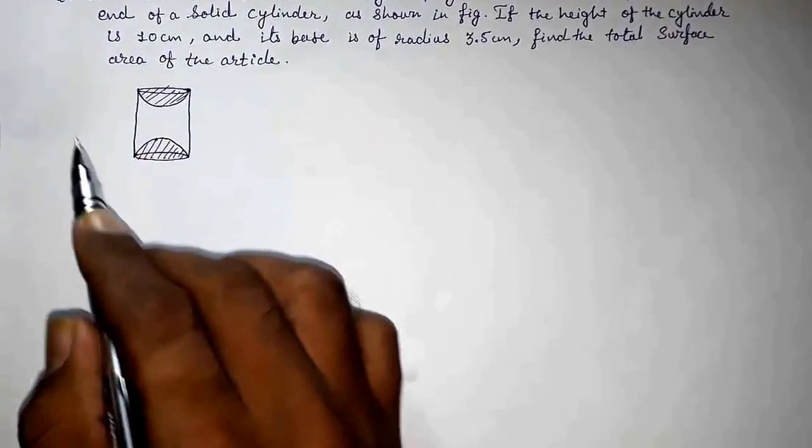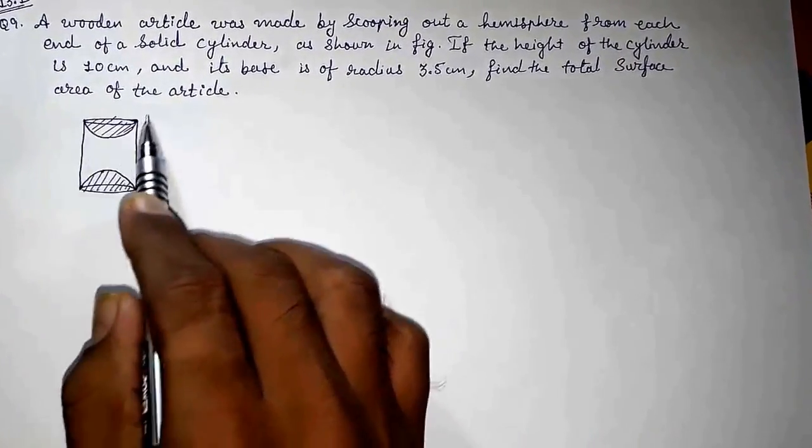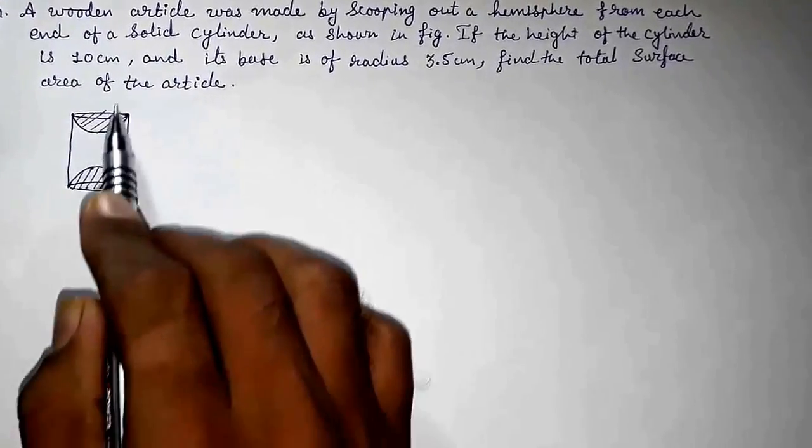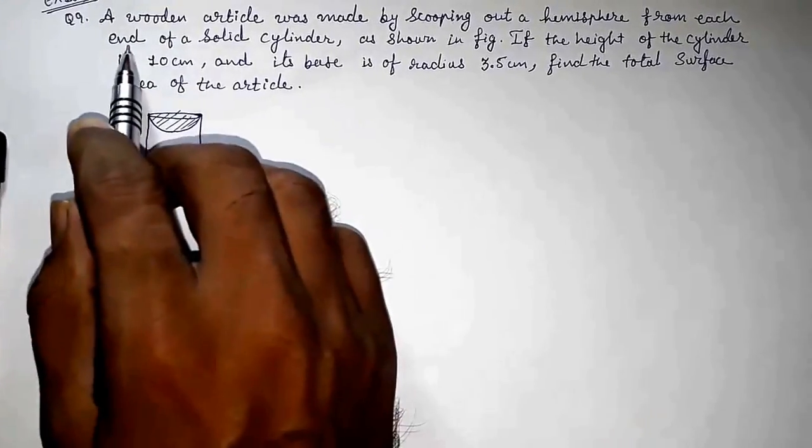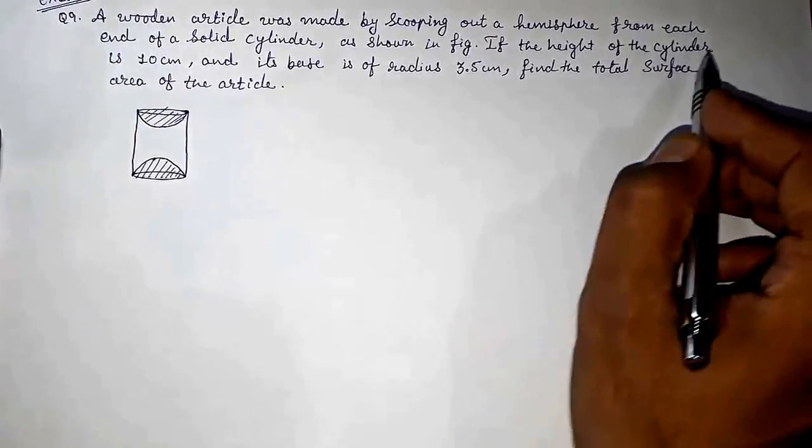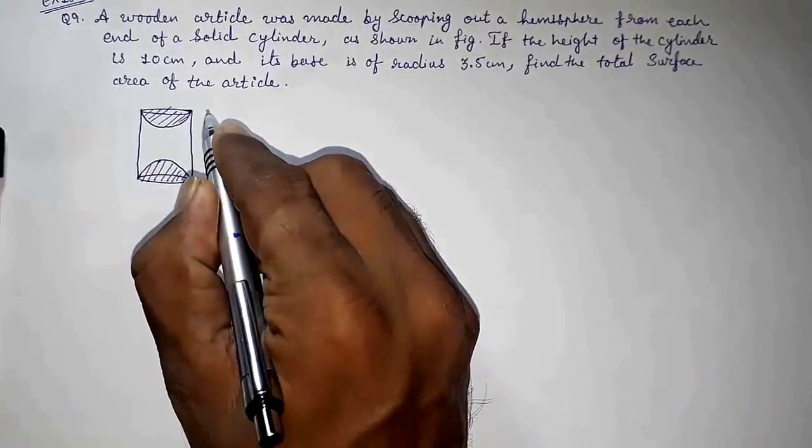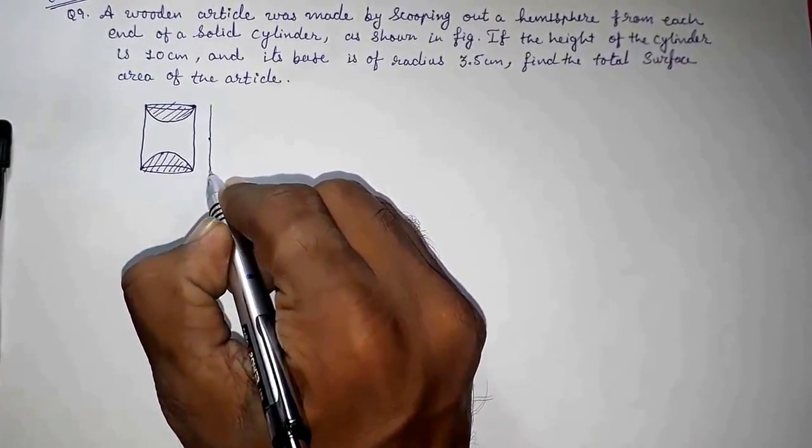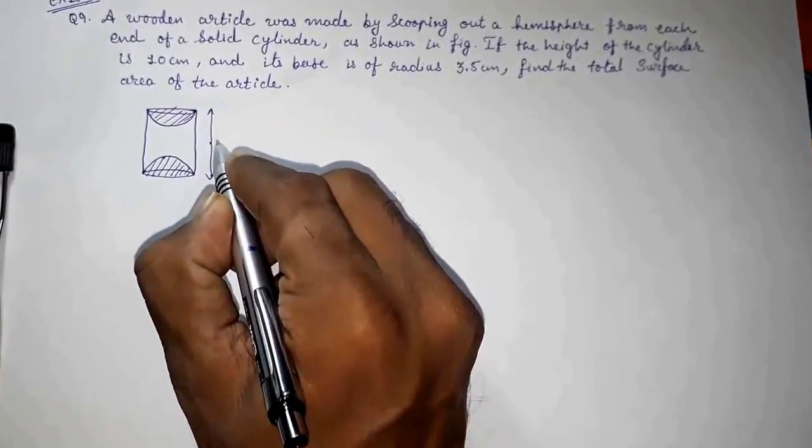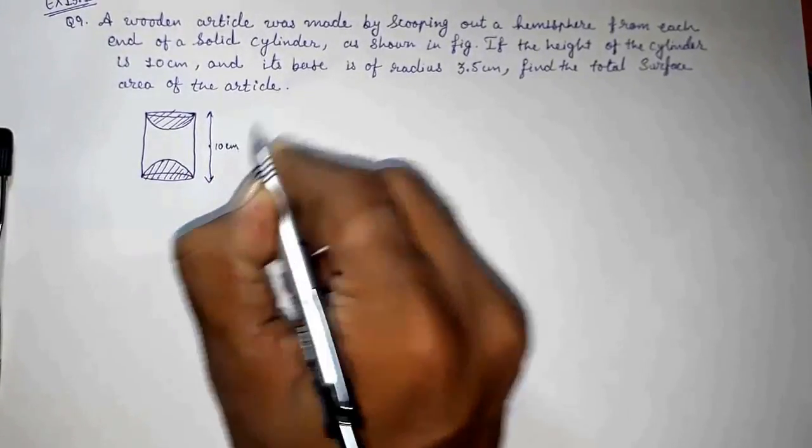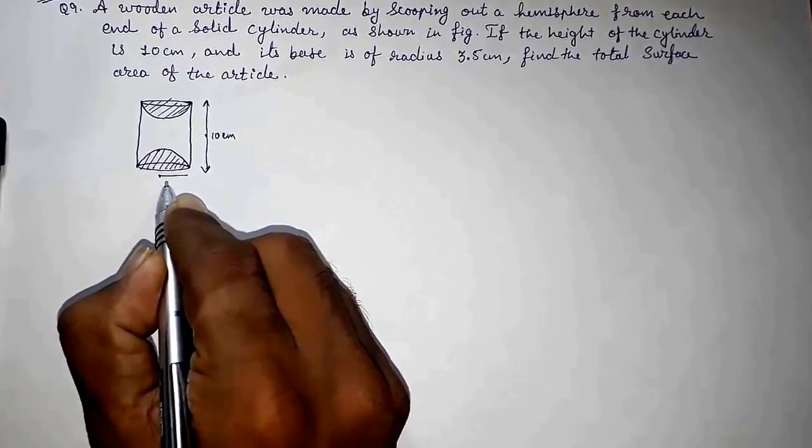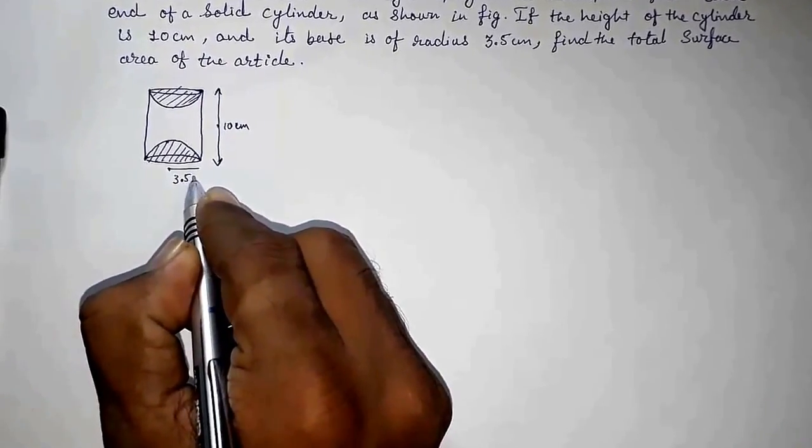Look here, you can see a cylinder and two hemispheres are cut out from it. Now we know the height of the cylinder is 10 cm, so this height will be 10 cm, and the radius will be 3.5 cm.